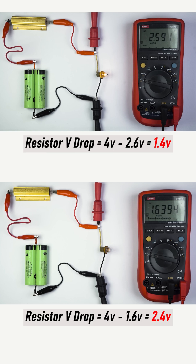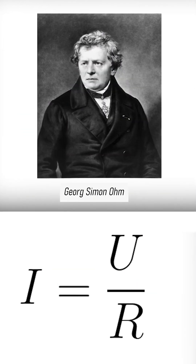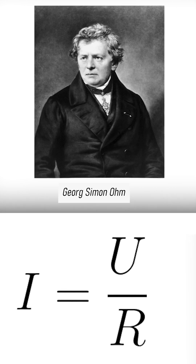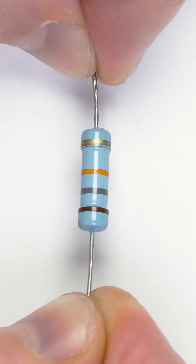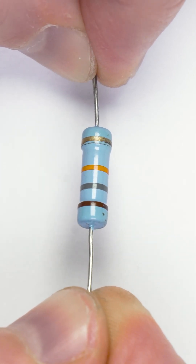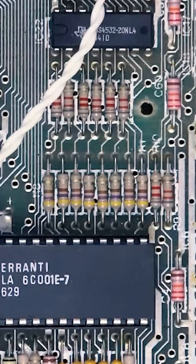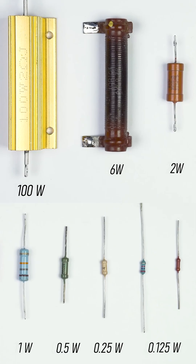Resistance is measured in ohms. This unit is named after the German physicist Georg Simon Ohm, who discovered the relationship between current strength, voltage, and resistance — today known as Ohm's law. The resistance is indicated on the body of the resistor by color code, which allows anyone to read the value, no matter the orientation of the part on the board.